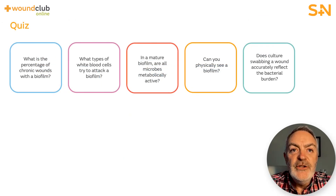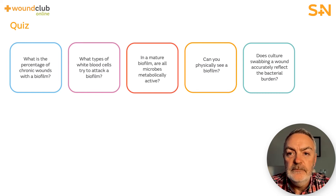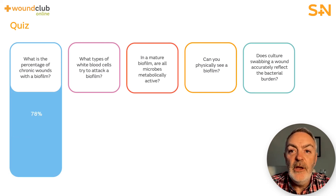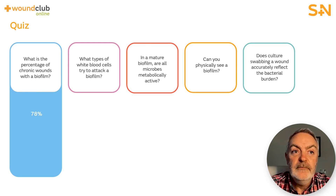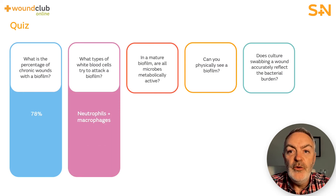To check your knowledge and understanding, try to answer the following quiz questions. Question 1: What is the percentage of chronic wounds with a biofilm? The answer is 78% of all chronic wounds will have a biofilm. Question 2: What types of white blood cells try to attack a biofilm? Neutrophils and macrophages will attack a biofilm.